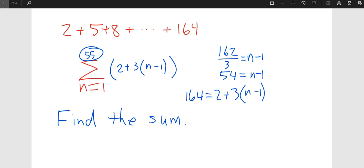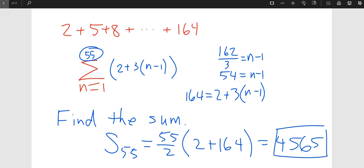If I asked you to solve or find the sum, this would be using little Carl's formula. We have all the pieces. We know that there are fifty-five terms. We know the first term was two, and we know the last term was one sixty-four, and so we can plug them all in to get our sum, which was forty-five sixty-five. Thank you for watching today's video on the arithmetic series.